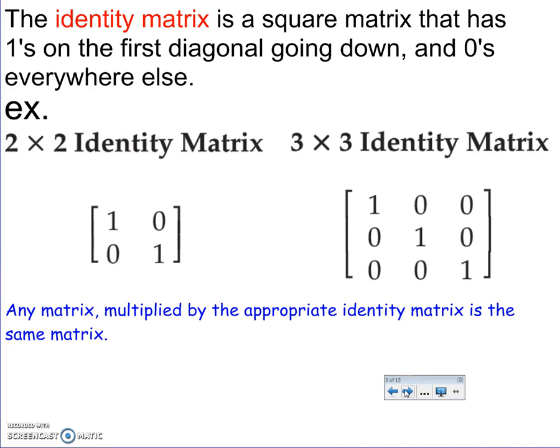So the identity matrix is a square matrix. It must be square. It has ones on the first diagonal going downwards and zeros everywhere else. So here's the 2x2 identity matrix, one's going downwards, zeros everywhere else. Here's a 3x3. One's going in the downward diagonal, zeros everywhere else. If they have a 1 somewhere else, it's not the identity. Any matrix multiplied by the appropriate identity matrix is the same matrix.